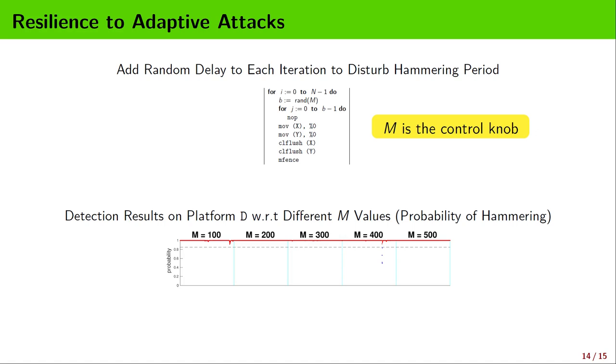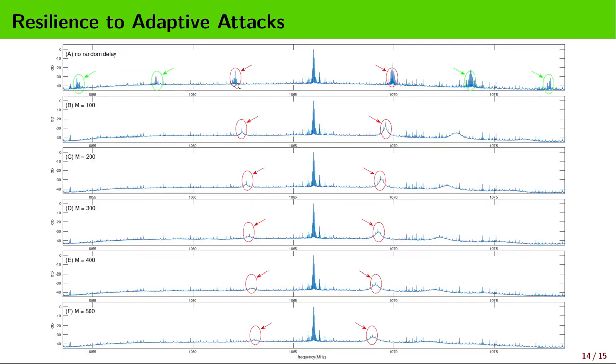We also deliberately introduced some random delays into each hammering iteration to try to circumvent the detection of RADAR. Here, we create such a scenario by adding B NOPs in each hammering iteration, where B is randomly chosen in the range of 1 to M. As we can observe from the evaluation results on platform D, even when M reaches 500, it still couldn't circumvent the detection. Notice that if we use a very large M, it will become no longer possible to trigger the Rowhammer bug. From the spectra, we can see when random delays are introduced, the periodic behavior of hammering is disrupted to some extent, but their correlated sideband patterns are still recognizable for their use in detection. From the spectrum on the top, we can also find that on this platform, the switching behavior of hammering has strong second and third harmonics.